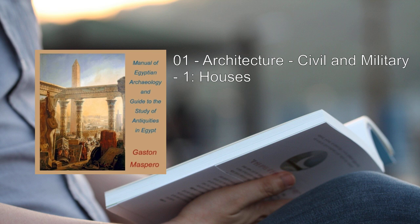At Tel el-Maskuta, the granaries of Pithom are yet standing. At San, Tanis, and Telbasta, the Ptolemaic and Satic cities contain quarters of which plans might be made, and in many localities which escape the traveller's notice, there may be seen ruins of private dwellings which date back to the age of the Ramesseids, or to a still earlier period.